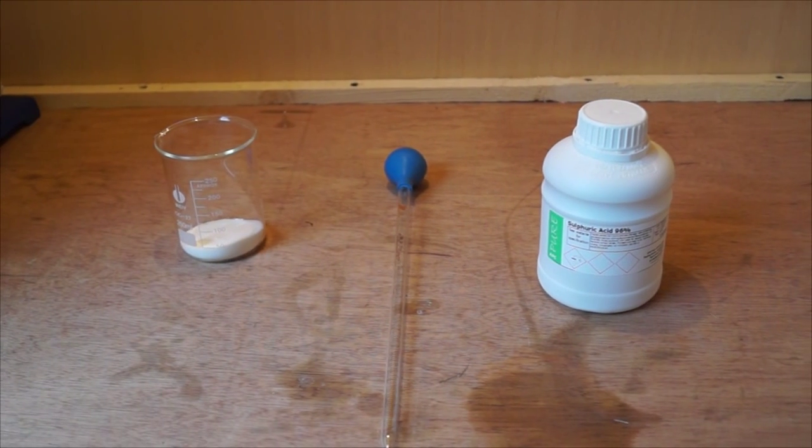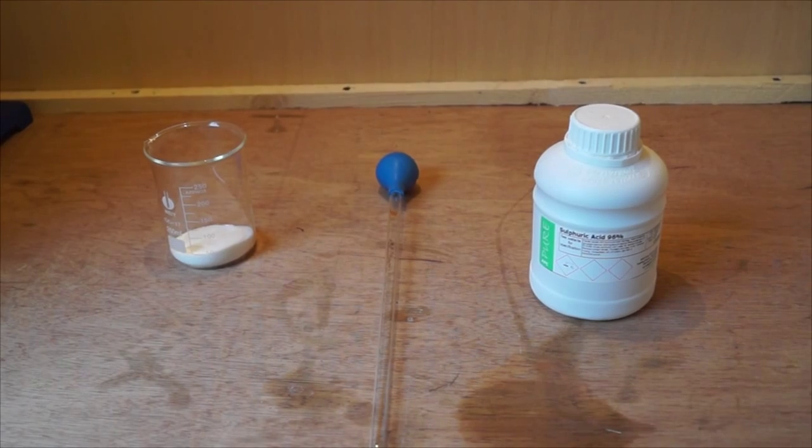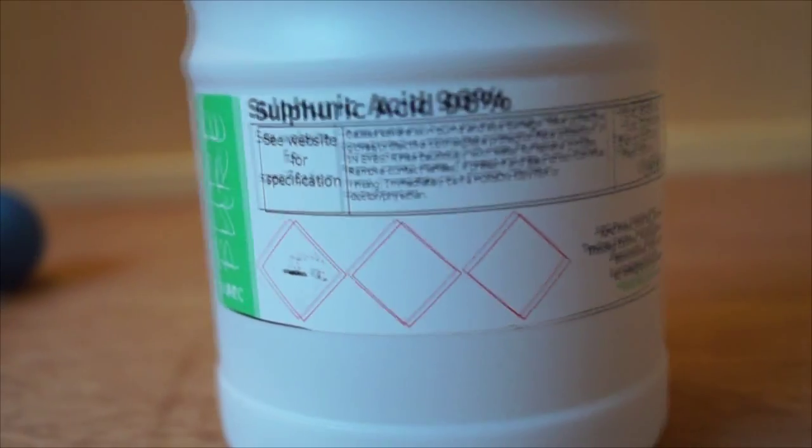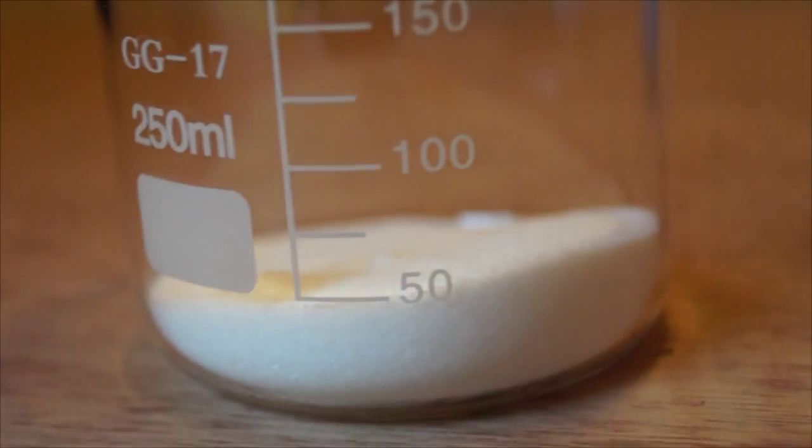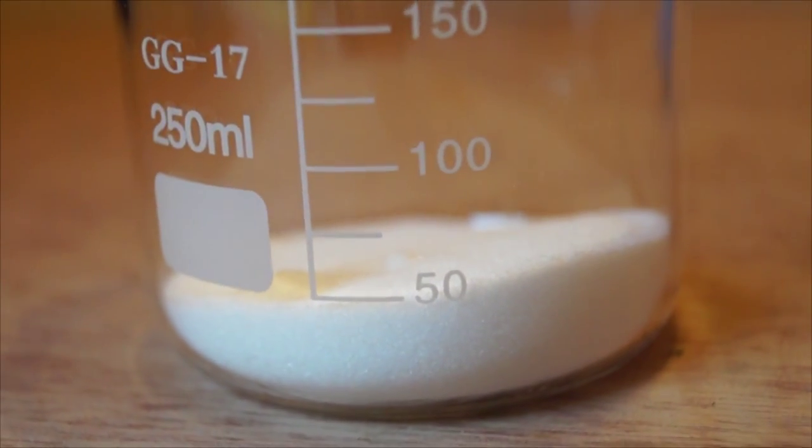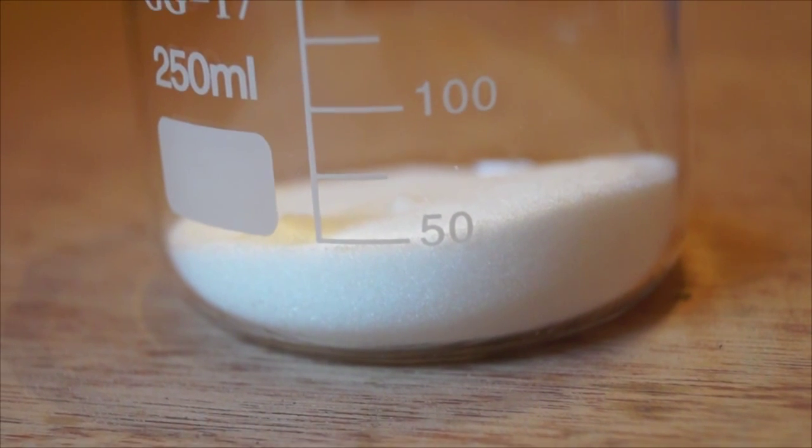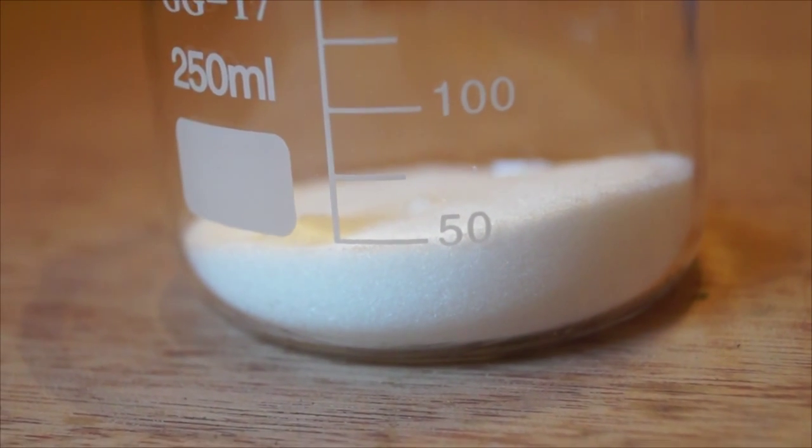Hello, and in this video we are going to be looking at the dehydrating properties of sulfuric acid. In this experiment I will be using approximately 20ml of concentrated 80mol of sulfuric acid and about 2 tablespoons of sucrose, that's normal sugar. I will first show the experiment and then explain the reaction mechanism taking place.